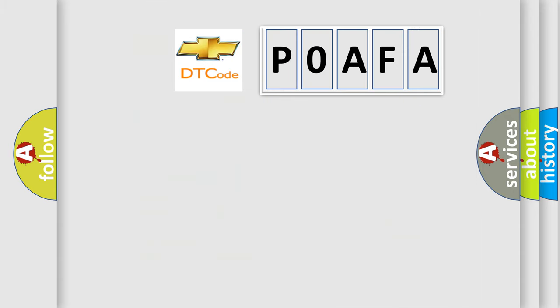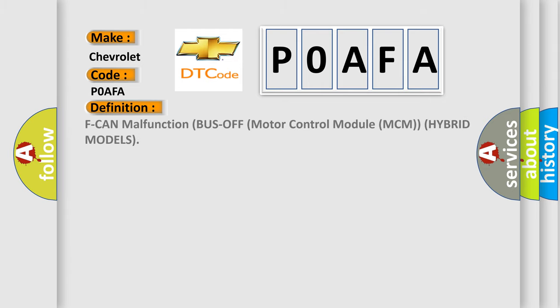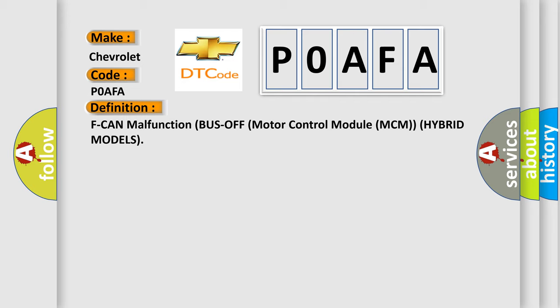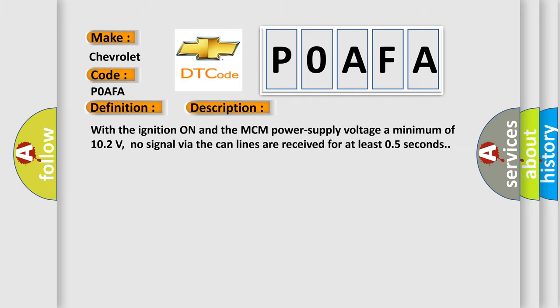So, what does the diagnostic trouble code P0AFA interpret specifically for Chevrolet car manufacturers? The basic definition is: CAN malfunction bus off, Motor Control Module (MCM), hybrid models. With the ignition on and the MCM power supply voltage a minimum of 10.2 volts, no signal via the CAN lines is received for at least 0.5 seconds.